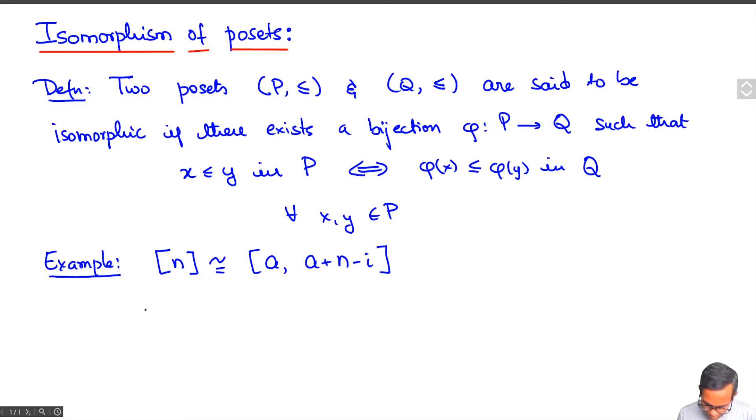And what is the isomorphism? Phi takes k to a plus k minus 1 for k equal to 1 to n. You can easily check that this is true.